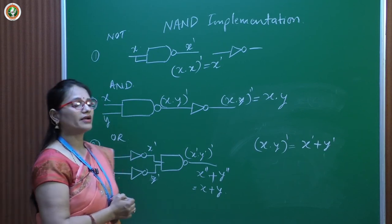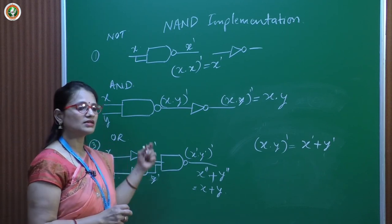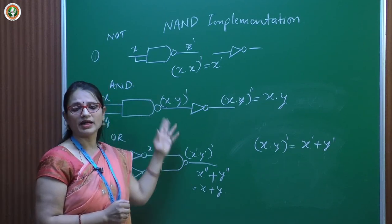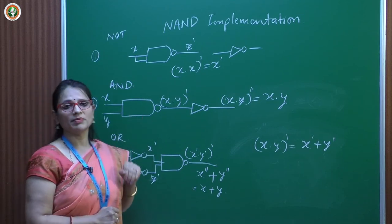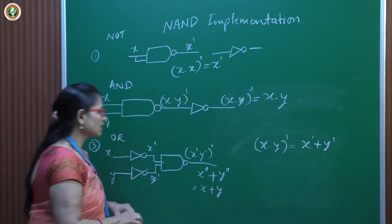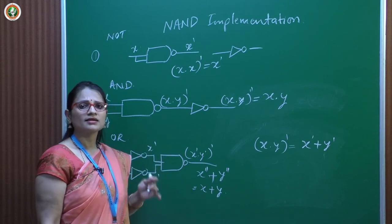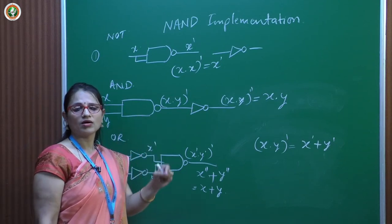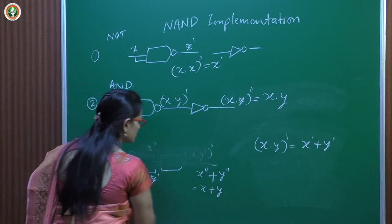Another reason for calling NAND a universal gate is fabrication. Converting circuits into ICs, NAND gate is much easier and cheaper to fabricate compared to AND or NOT gates. That is why most circuit designs are done using NAND or NOR gates. Now let us look at examples — we will see the same circuitry using AND-OR combination and then how to convert it using NAND-NAND combination.